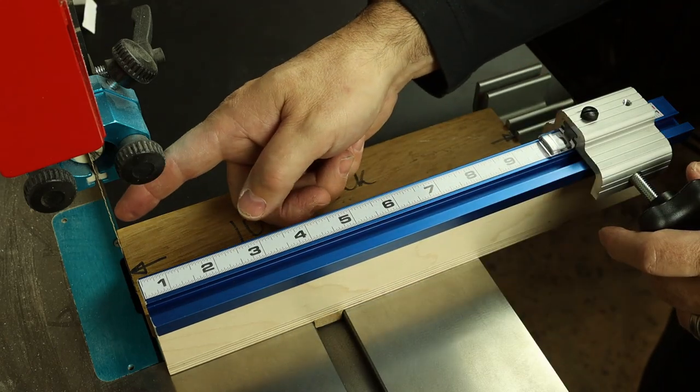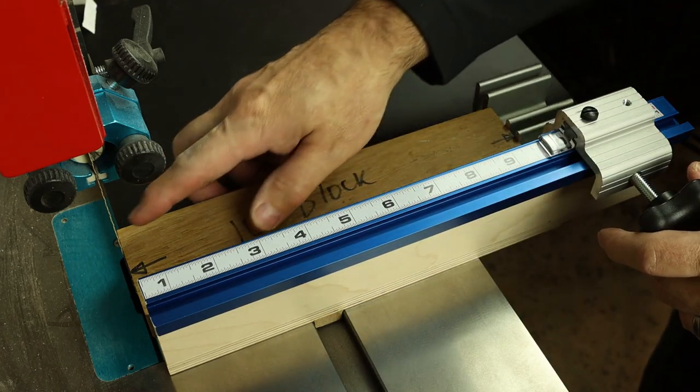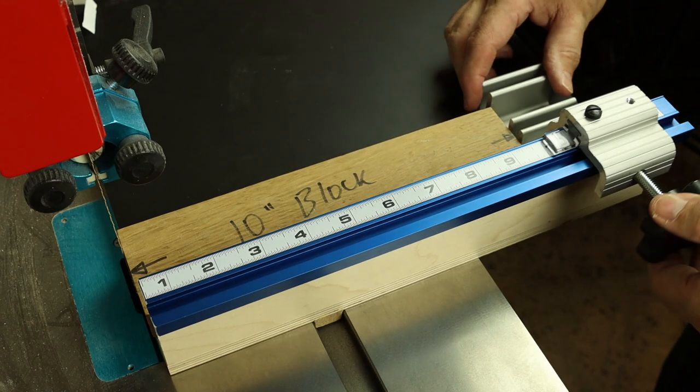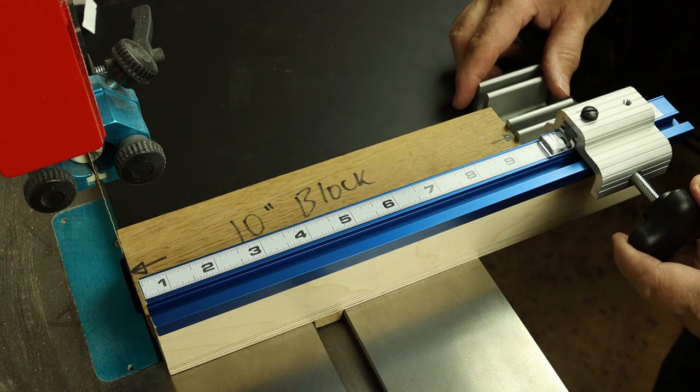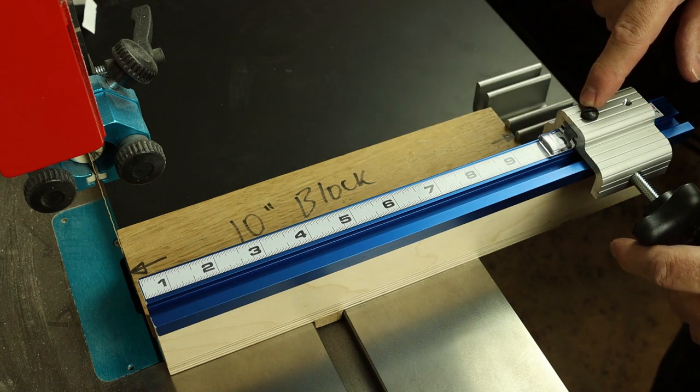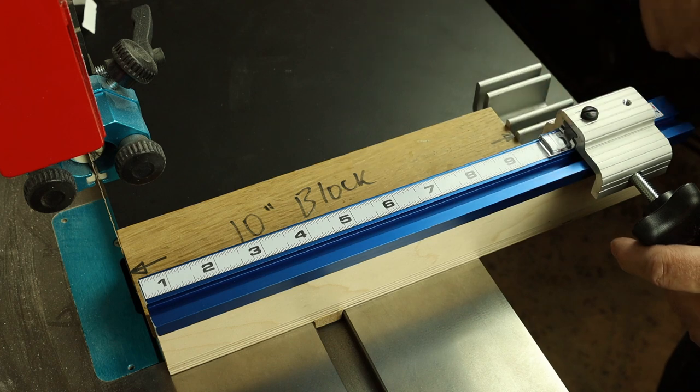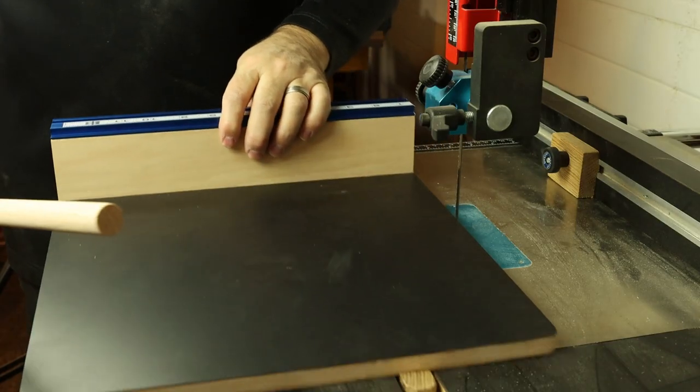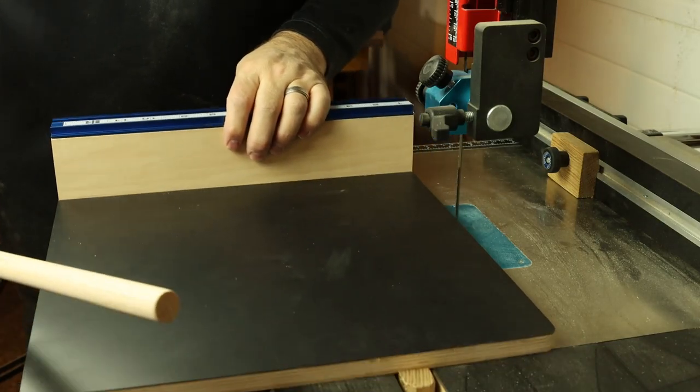You want to make sure your blade is tensioned during this step of course for the most accurate readings, but just slide your stop block back into position and make sure that it's correct. Any fine-tuning can be done with the cursor adjustment. Looks good, we're right on 10 inches.